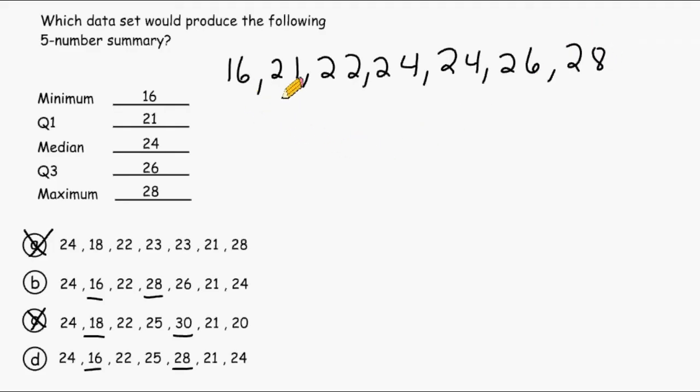In our data set we have 1, 2, 3, 4, 5, 6, 7 observations. Because this is an odd data set we can go ahead and circle our median value. And as you can see the median of data set B matches up with this median right here which is 24.